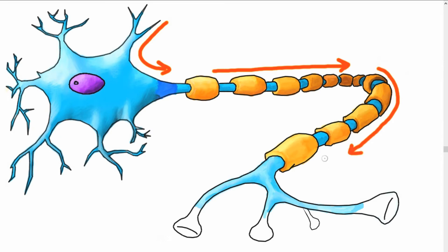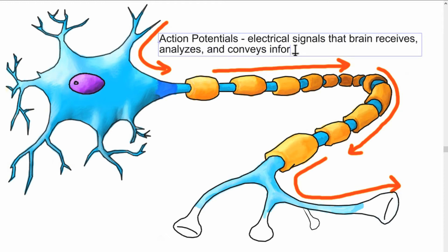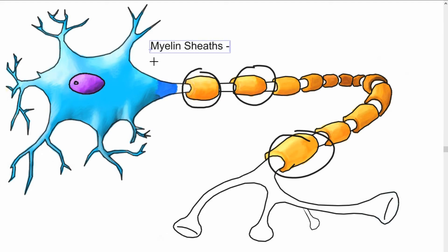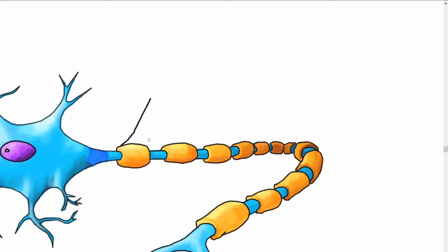These signals traveling down are called action potentials. They are what the brain uses to receive, analyze, and convey information. If you look at this particular axon, you'll notice some material wrapped around them. These structures are called myelin sheaths. In slight detail, myelin is a lipid fatty substance, and it comes from the surrounding myelinating glial cells.